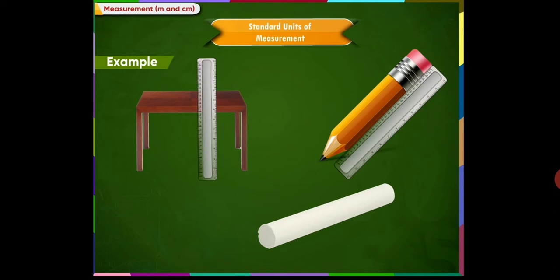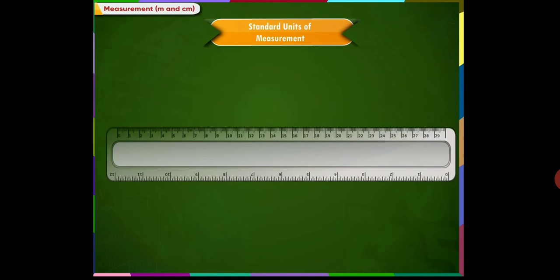Centimeter is a unit which is used to measure smaller lengths. In short, centimeter is written as cm. Look at this scale. It has two different measurements. This is called the centimeter side of the scale and this is called the inches side of the scale.